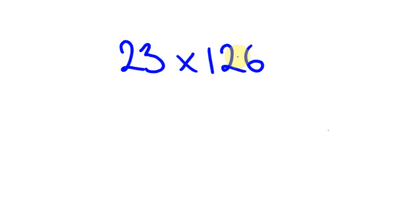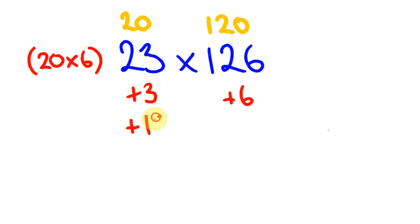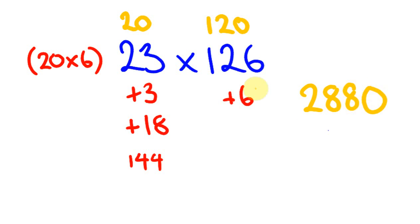Next: 23 times 126. We use 20 and 120, since 20 goes into 120 — written as 20 times 6. This 23 is 3 more than 20, and 126 is 6 more than 120. Third number: 6 times 3 is 18, so plus 18. Then 126 plus 18 is 144, times 20: 144 doubled is 288, so 2880. Finally 6 times 3 is 18, add 18 to get 2898.